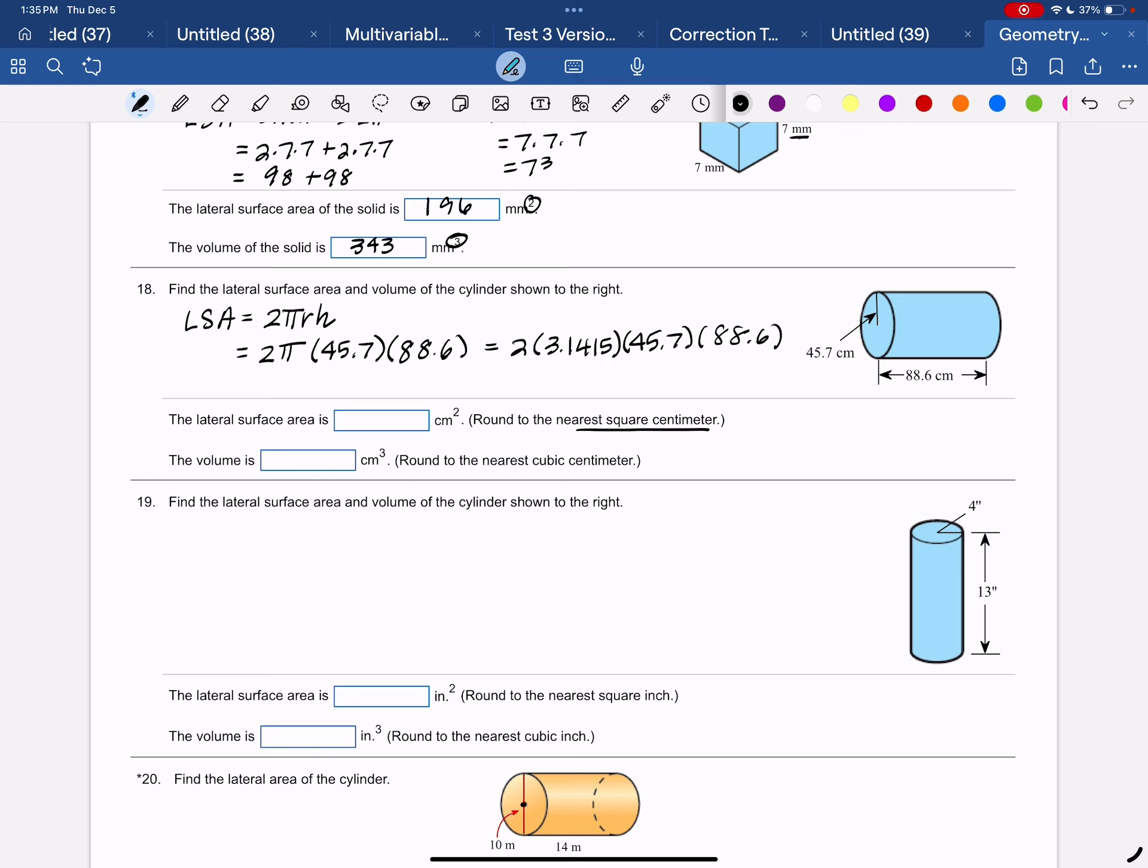So 2 times 3.1415 times 45.7 times 88.6 is 25,439, and it says the nearest and it means whole. So 440 because it comes out 25,439.99. No, let me fix that.